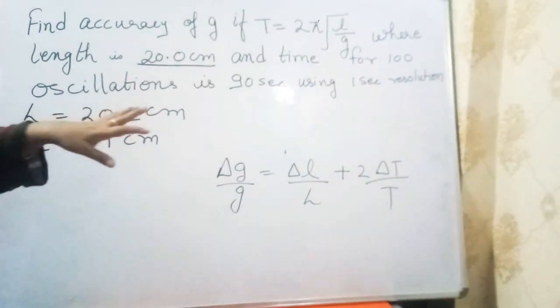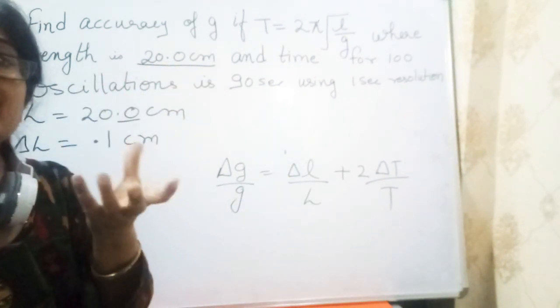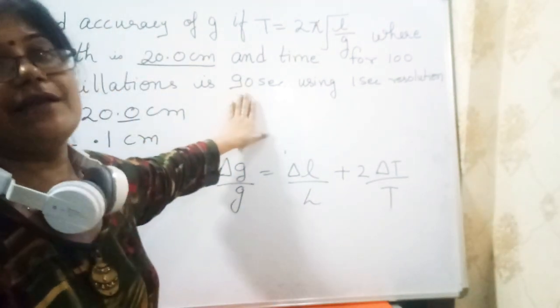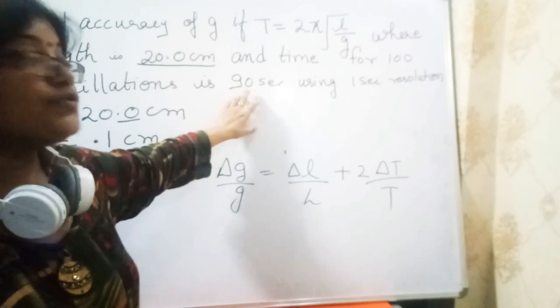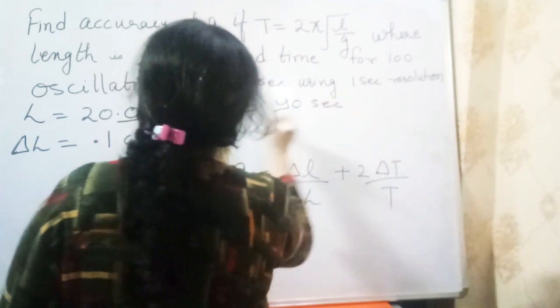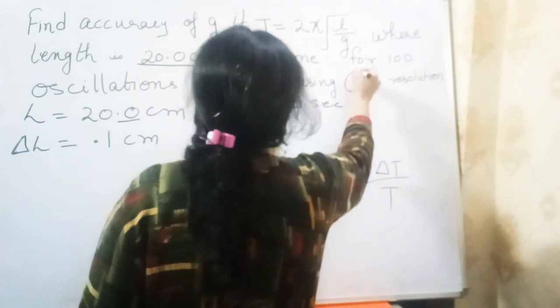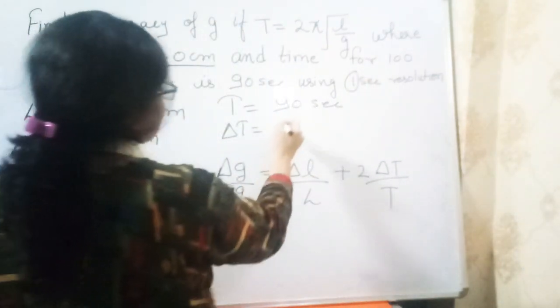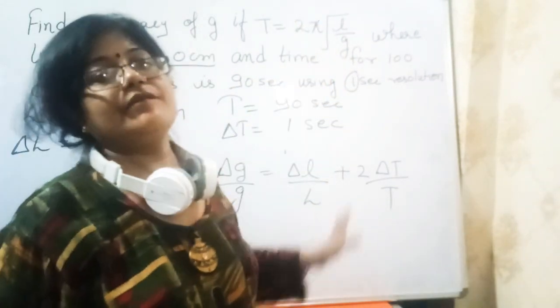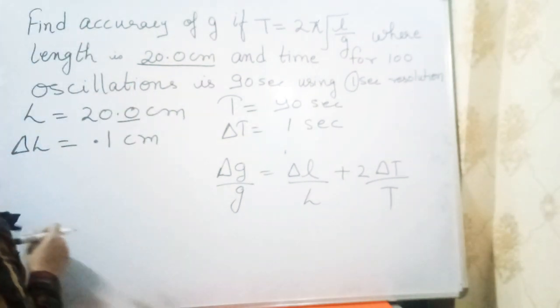This is a tough task. 100 oscillations is 90 seconds - what's the actual value we measure? We find it's 90 seconds, the true value. So T is 90 seconds, and delta T is 1 second from the resolution. There's no use of 100 in our question.